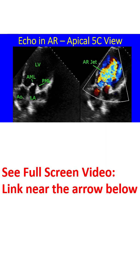Thickening of both aortic and mitral leaflets indicates the possible etiology as rheumatic. Mitral and aortic valves are the most often involved valves in rheumatic heart disease, the former being more common between the two.